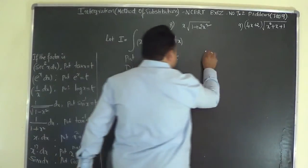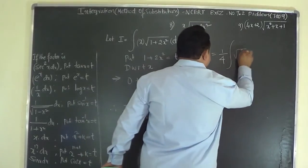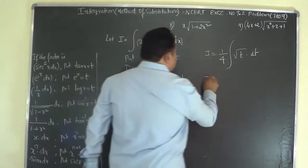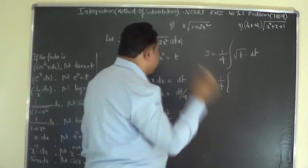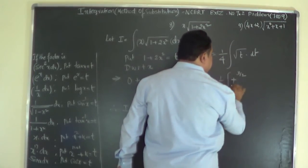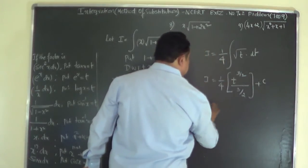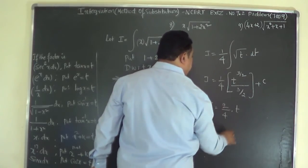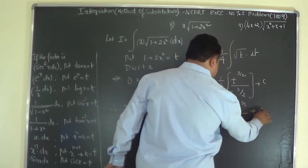Taking the constant 1/4 outside the integral sign: I equals (1/4) times the integral of root t dt. Integrating root t, which is t^(1/2): I equals (1/4) times t^(1/2 + 1) over (1/2 + 1) plus C, that is (1/4) times t^(3/2) over (3/2) plus C.